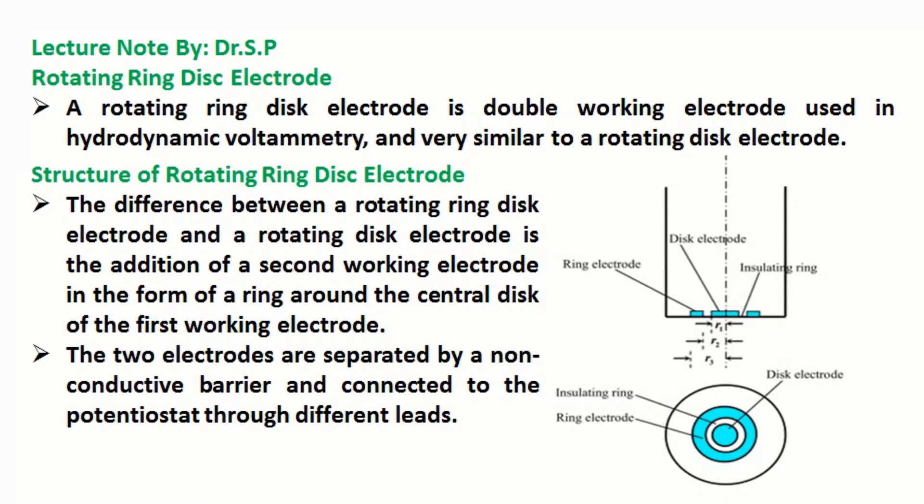Structure of rotating ring disc electrode: The difference between a rotating ring disc electrode and a rotating disc electrode is the addition of a second working electrode in the form of a ring around the central disc of the first working electrode. The two electrodes are separated by a non-conductive barrier and connected to the potentiostat through different leads.